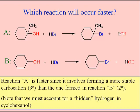Since tertiary alcohols react faster than secondary ones, that's why we can decide that reaction A would go more quickly. It would require less strenuous conditions — we wouldn't have to heat it as much or as long as we would for the second reaction. That second reaction would still work, but not as easily as the first one. That methyl group that's present makes a big difference.